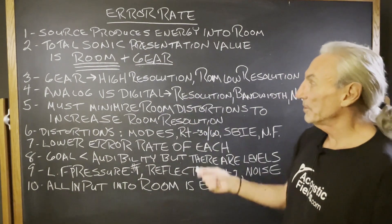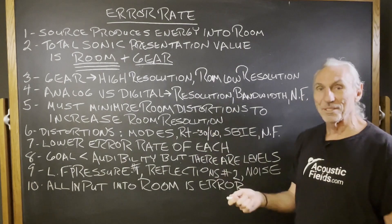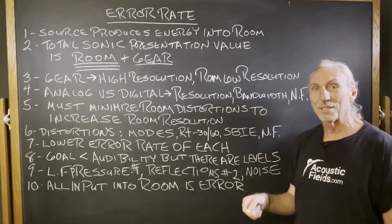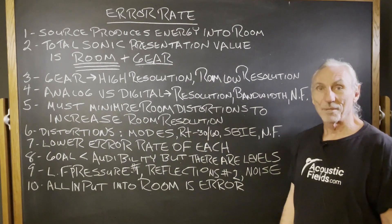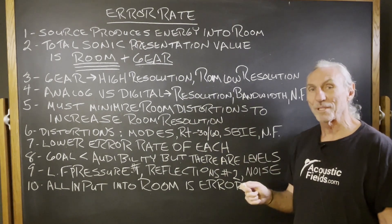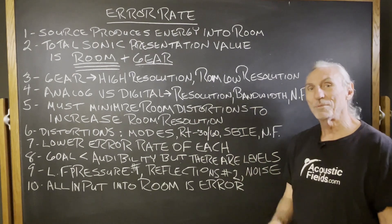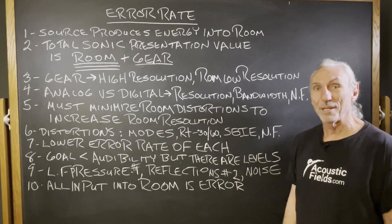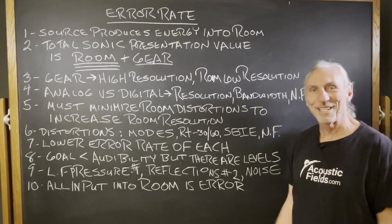So analog versus digital, it's kind of like the same thing. Our gear is high resolution, digital in some cases, analog in others, but in either case, the resolution is really high. And then we take that gear and we put it in a room with a high error rate or lots of distortion. It makes no sense.